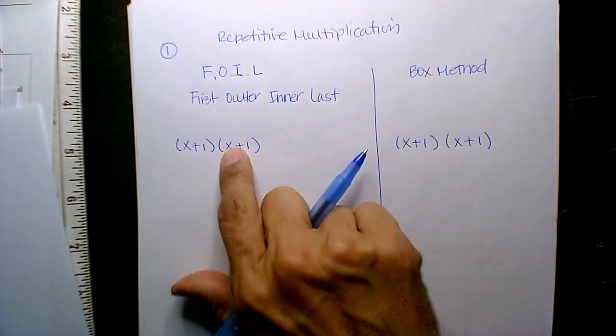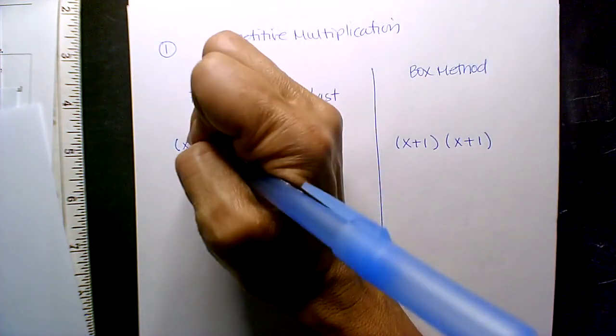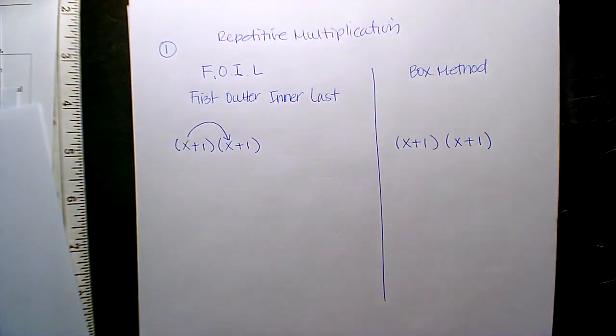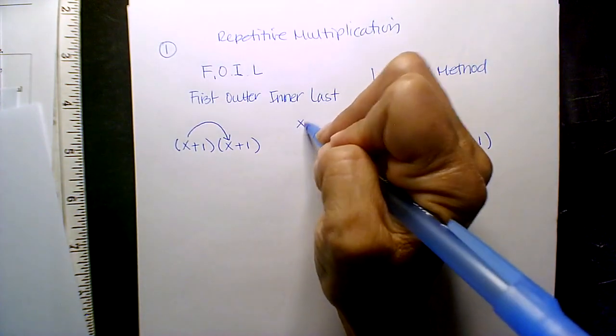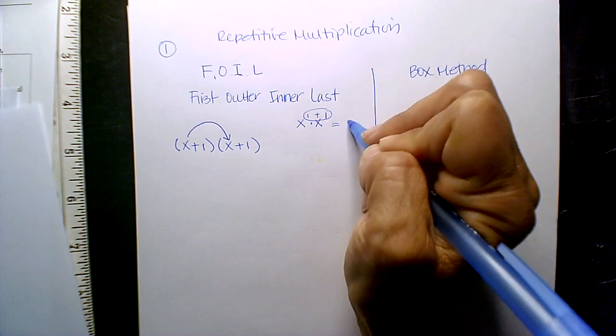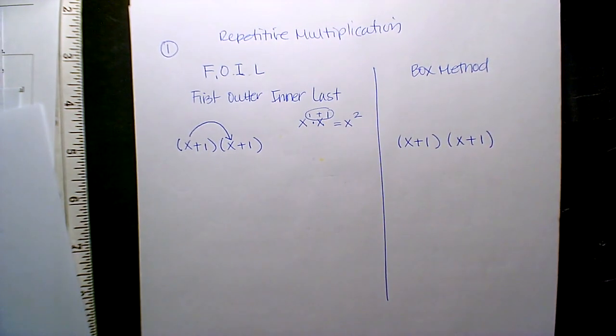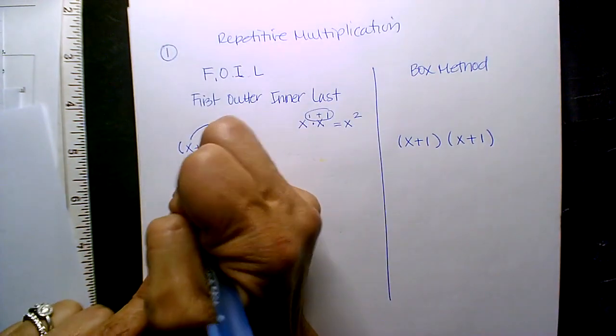Alright, I call this arrows, but it's technically foiling: first, outer, inner, last. So look, if you go x times x, you're multiplying. Remember, x^1 times x^1, you add exponents, so that is x squared. So x times x is x squared.